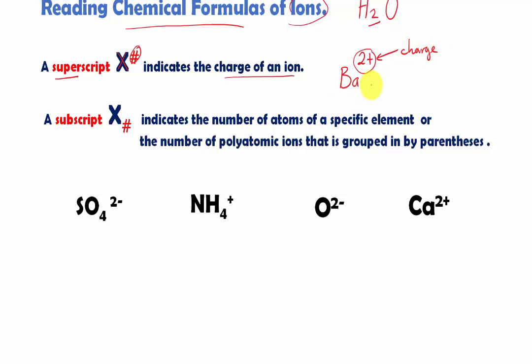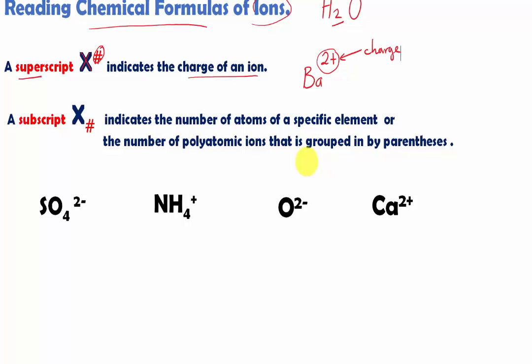Or we can say the other way around, where oxygen has gained two electrons to be stable, and oxygen is going to have two minus. Notice how the two are not written right here, but it's written on top or above the chemical symbols. That's why we call it a superscript.